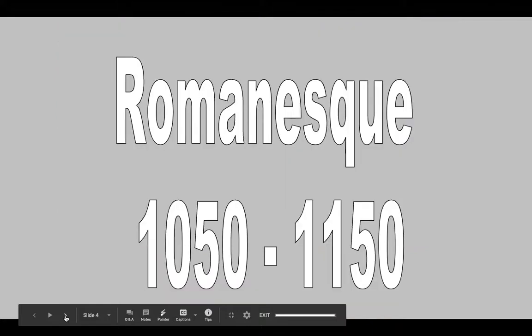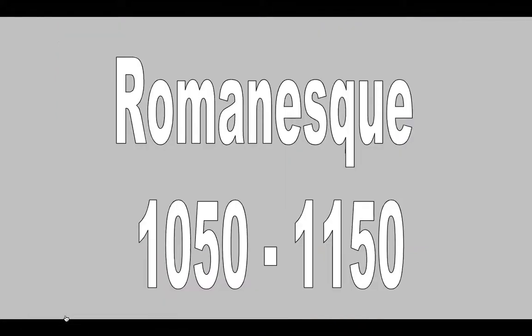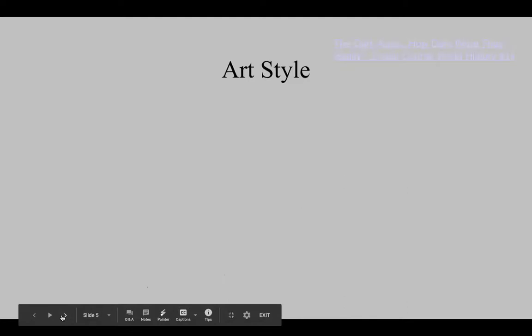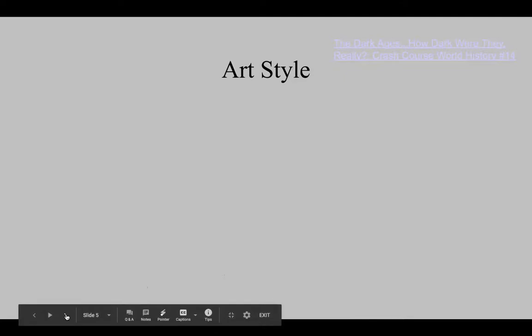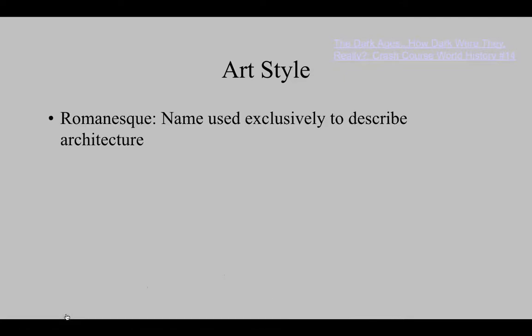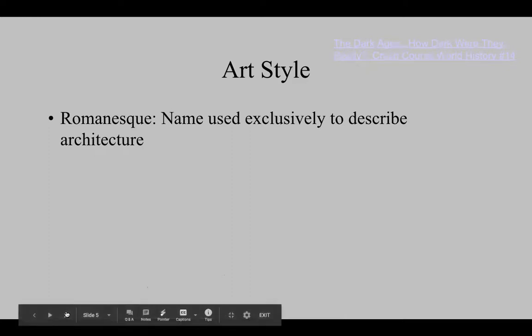The Romanesque time period is a relatively short time — about 100 years, from about 1050 to 1150. You can go to Crash Course and watch a video about the Dark Ages; John Green talks about this time period. Romanesque is usually used for architecture; we don't normally talk about painting or sculpture being Romanesque, though we will see a sculptural object from this period as well.